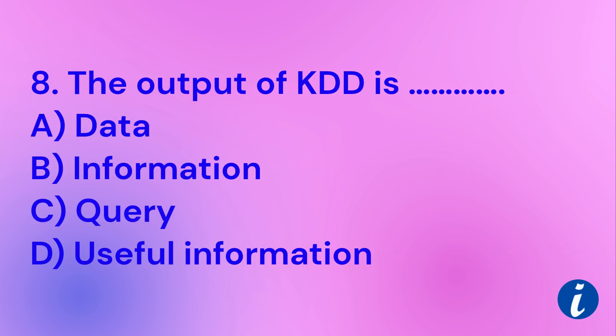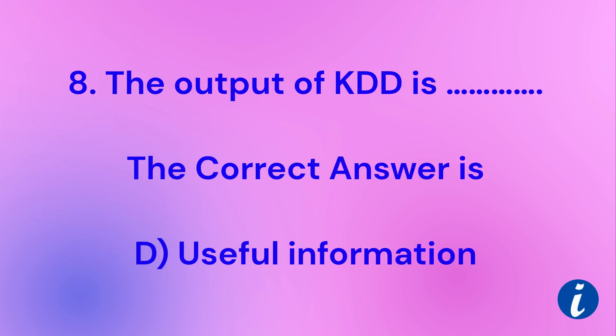Question 8. The output of KDD is: A. Data, B. Information, C. Query, D. Useful information. The correct answer is D. Useful information.